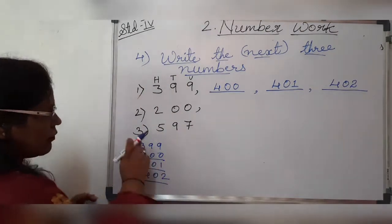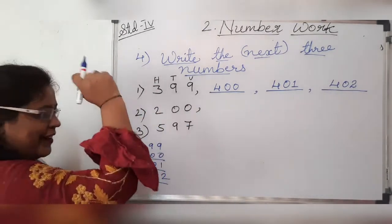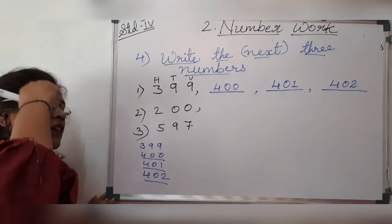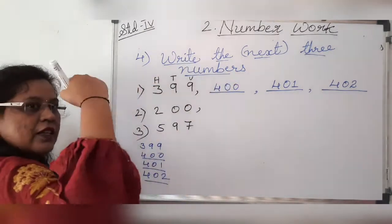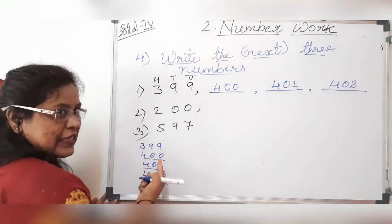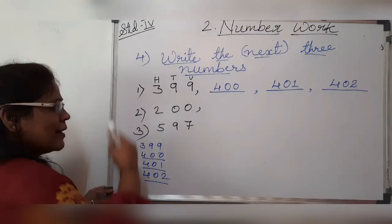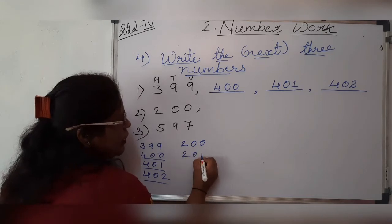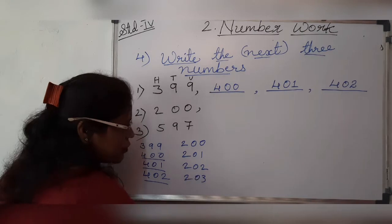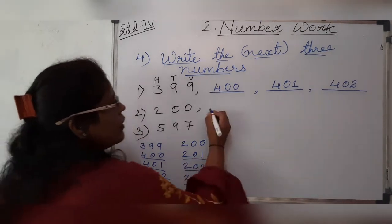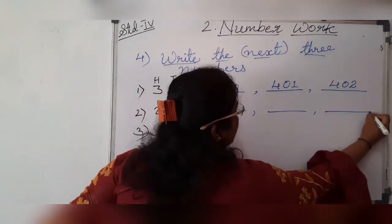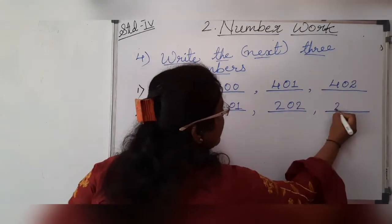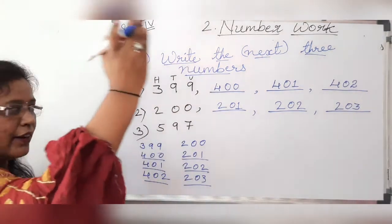The next number given is two hundred — a round figure. We will write the next three numbers. Tell me what comes after two hundred. I know you have learned numbers from standard first, second, third, and now you are in the fourth standard, so it should be easy. After two hundred: two hundred and one, two hundred and two, and two hundred and three. Those are the next three numbers after two hundred.